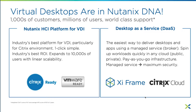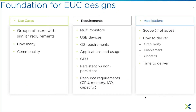There are two main ways EUC is deployed on Nutanix. The traditional approach is Citrix or VMware Horizon deployed on the Nutanix HCI platform, where Nutanix performs the compute and storage functions. The other is Desktop as a Service — using Citrix Cloud or our Nutanix Frame offering — which can run in a hybrid fashion with the control plane in the cloud and worker VMs on Nutanix on-prem.